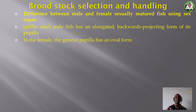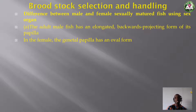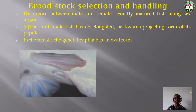The female fish has an oval, rounded form of reproductive organ. The male fish's genital papilla is elongated and points backward, while the female fish's genital papilla is round and oval in nature.